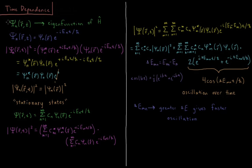We start by looking at psi_n of r, t — r being the spatial part of the wave function. In one dimension, just x; two dimensions, x and y; three dimensions, x, y, and z — just representing whatever the spatial variables of the wave function are, and a function of time. This is an eigenfunction of the Hamiltonian operator.